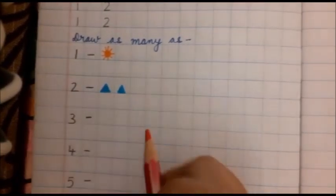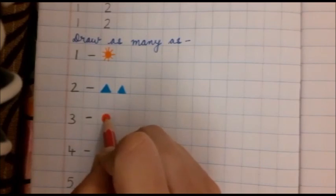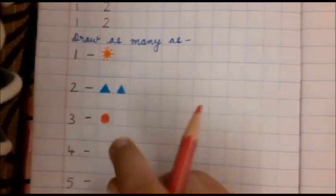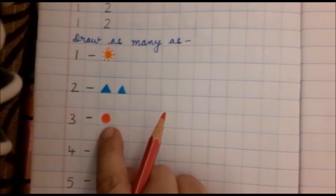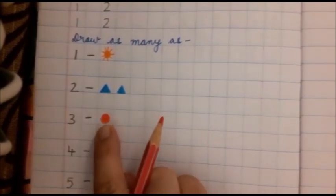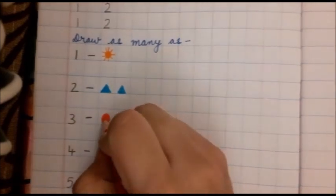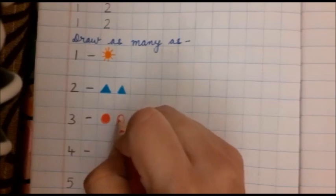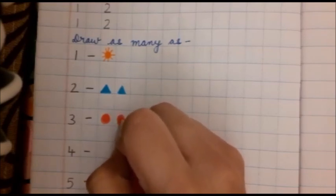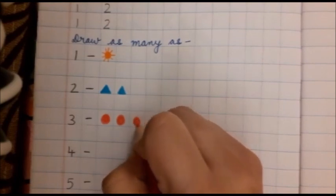Next is number 3. Now, see what Anubha ma'am is going to draw. What is this? I have made a circle. Three. How many circles will I make? Will I make one circle? I will make three circles. So, one, two, and three.